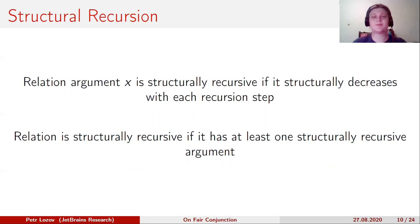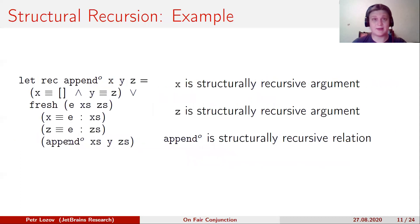To formulate our predicate, we need the definition of structural recursion. An argument of a relation is structurally recursive if it structurally decreases with each recursion step. And a relation is structurally recursive if it has at least one structurally recursive argument.